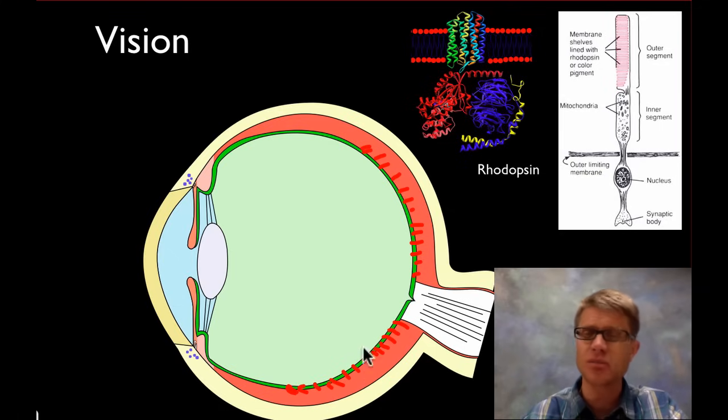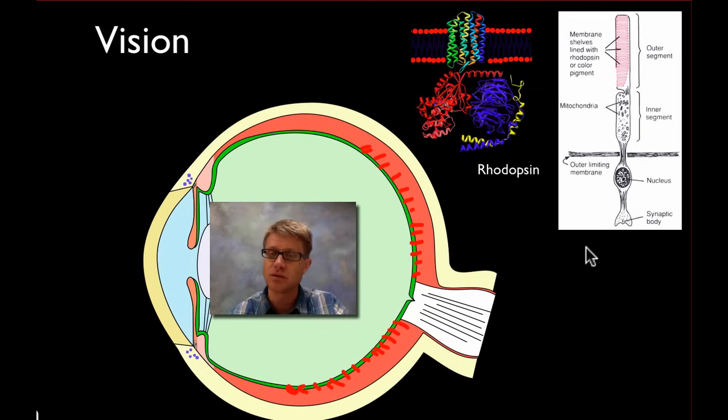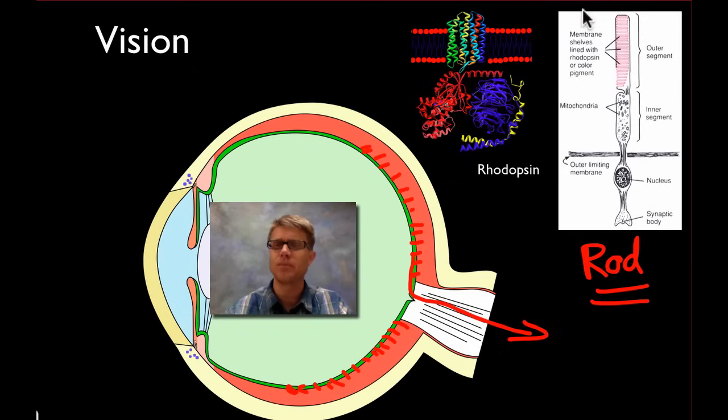But what do these receptors look like? Well this is one right here. This would be a rod right here. A rod is going to pick up light. So basically down here it's just like a neuron but we've got a sensory portion to it. You can see that there's a synapse here. Then that's going to send that to cells that will go through the optic nerve and eventually to the brain.